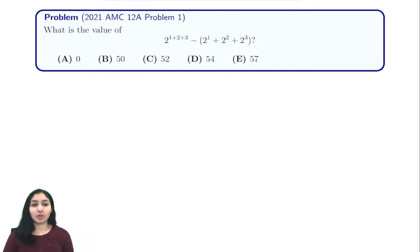Our question asks us the value of 2^(1+2+3) minus (2^1 + 2^2 + 2^3).